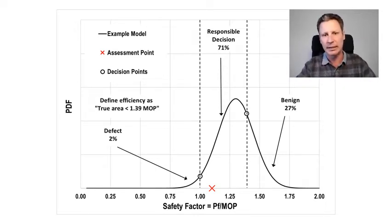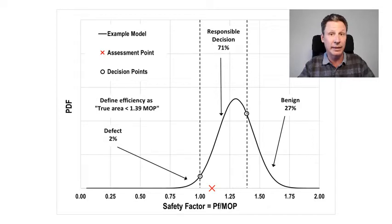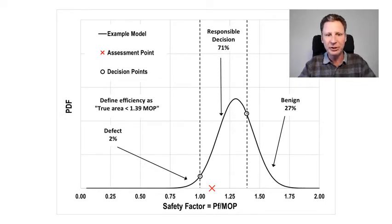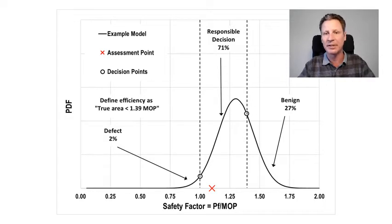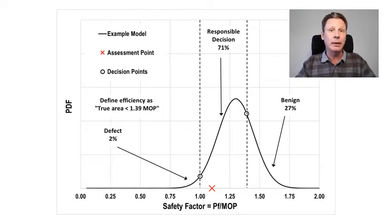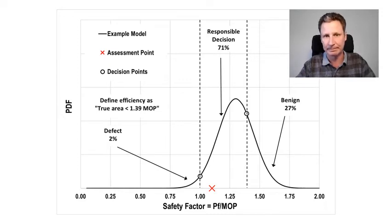Hopefully that sort of makes sense — it's a fairly simplistic thing to think about. When demonstrated graphically like this, you can recognize there's a relatively simple way to think about the efficiency of this model and this calculation. For the purposes of this paper, I've defined the efficiency as what percentage of that normal curve's area is actually below a safety factor of 1.39 — the probability that you're actually making a good and responsible decision as opposed to inadvertently responding to a benign defect that really doesn't need any repairs. In this particular case, the probability of dealing with a defect is 2%, the probability of making a responsible decision is 71%, which translates to an efficiency of about 73% for this model on this assessment point.